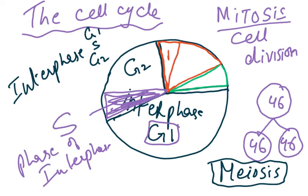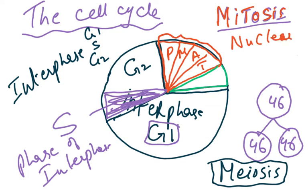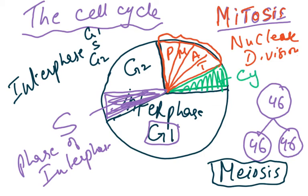Mitosis — P, M, A, T — is actually nuclear division, not the full cell division; it is only the nucleus dividing. After mitosis, the cytoplasm divides in a process called cytokinesis. The full cycle is: interphase (G1, S, G2), then mitosis (prophase, metaphase, anaphase, telophase), then cytokinesis.